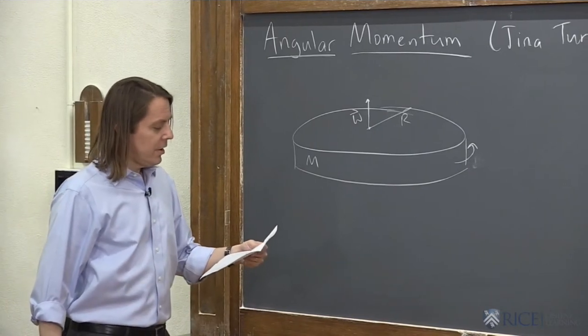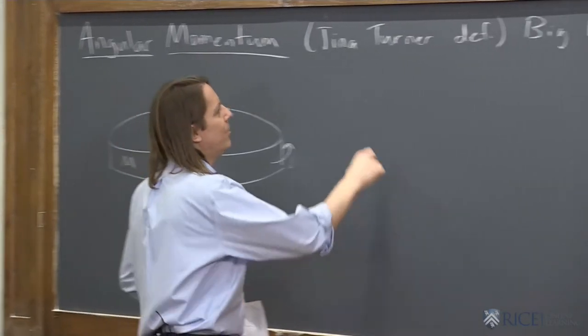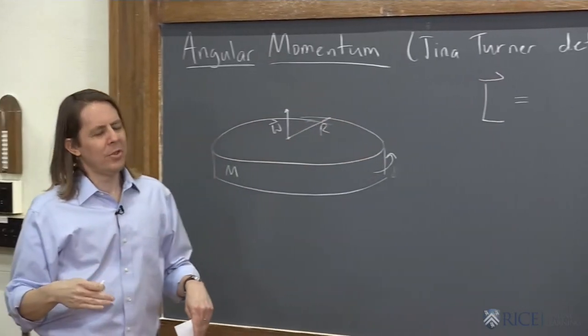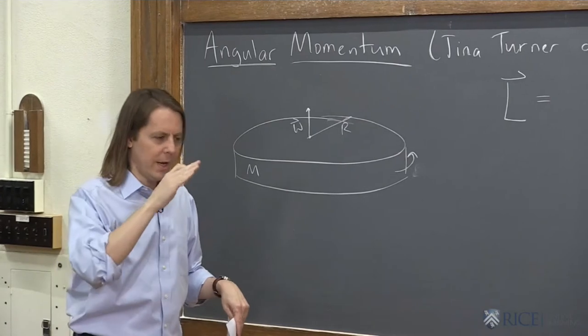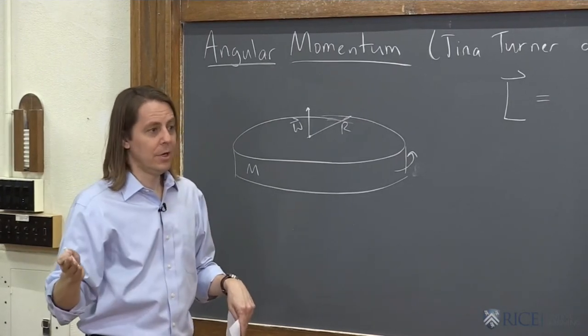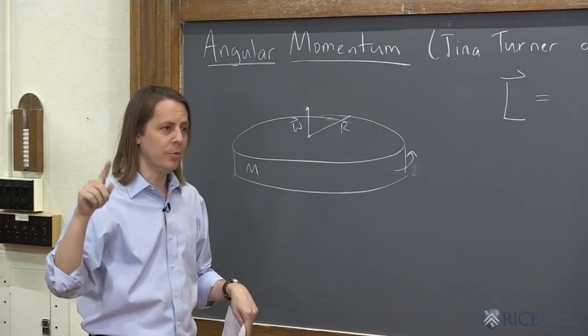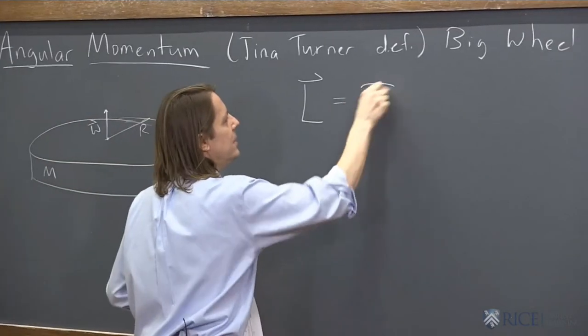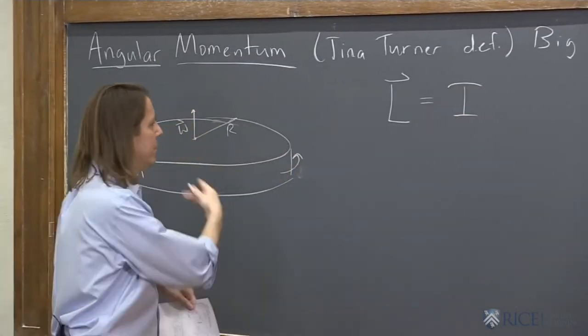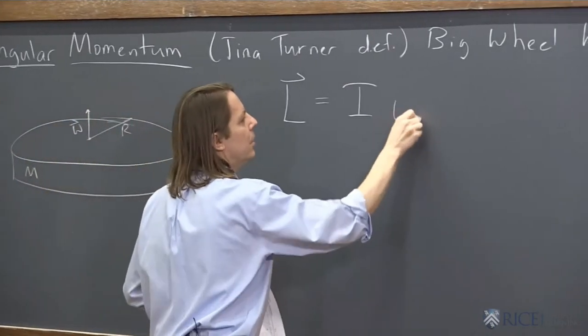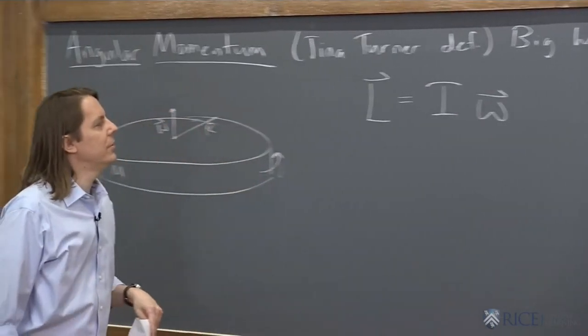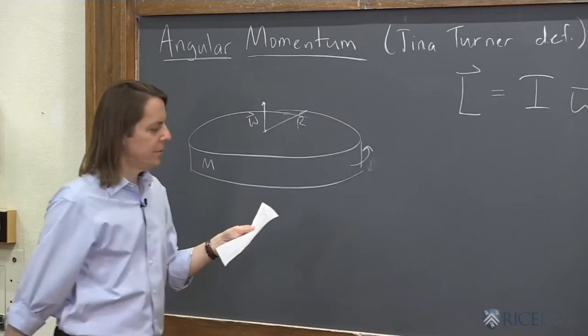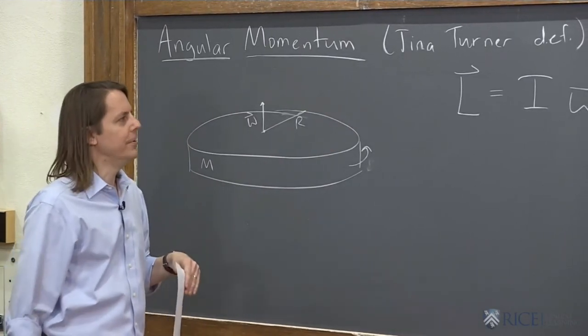So let's see. If we want to define then the angular momentum, this is the straightforward approach. We're just going to define it. And we can think to all the similarities between angular or rotational and translational. Translational momentum P equals mass times velocity. So this is just the rotational version of that. It's the moment of inertia of the wheel times its angular velocity. So L, big L, is angular momentum and it equals I omega, just like P equals MV.